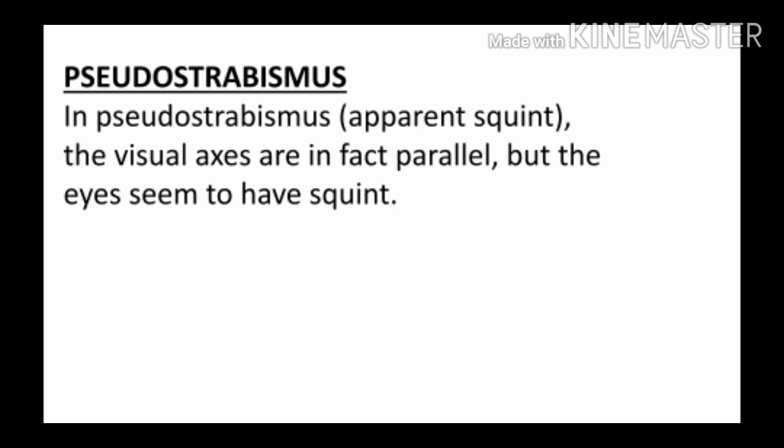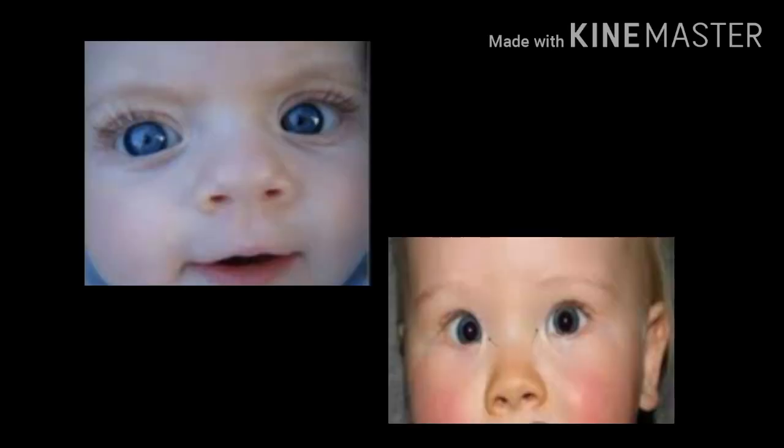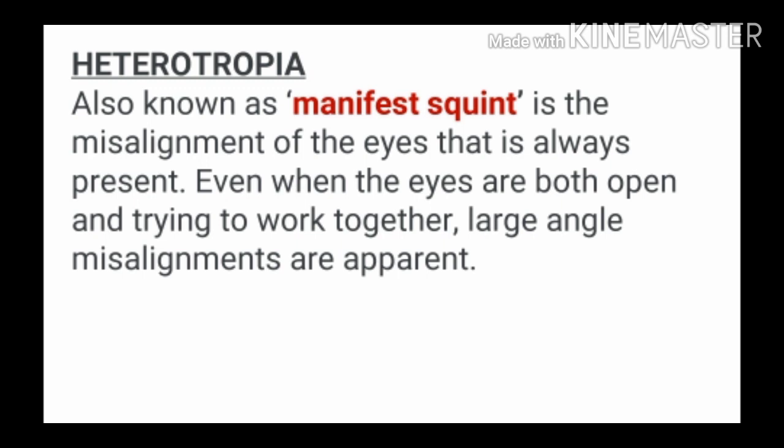Pseudo strabismus is also known as apparent squint. In this condition, the visual axes are parallel — that means the visual axes are properly aligned — but when we look at the patient, his eyes will appear as if he has a squint. As you can see in this image, the eyes appear like they have a squint, but because the visual axes are parallel, this is a case of pseudo strabismus.